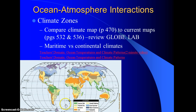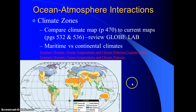Then we have cold currents losing energy — cold and potentially dry — creating arid, dry areas. You can find a couple other examples of this on the map as well.